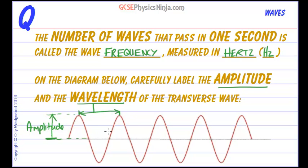So, frequency is measured in hertz, wavelength is peak to peak, and amplitude is from the centre to the peak.